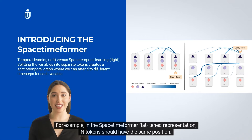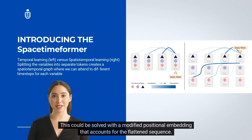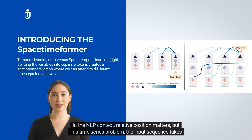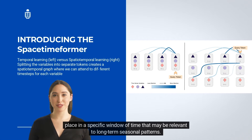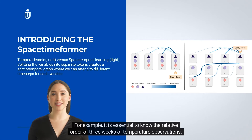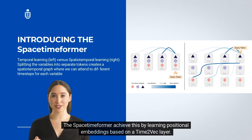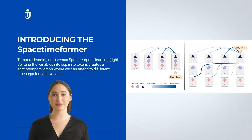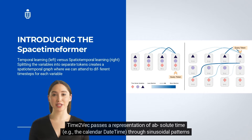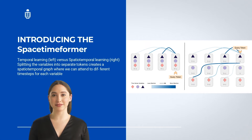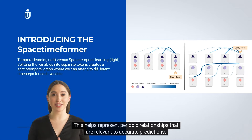This is fixed by adding a position embedding to the tokens, usually with a fixed sinusoidal pattern. In the Spacetime Former's flattened representation, n tokens should share the same position, which requires a modified positional embedding that accounts for the flattened sequence. However, a fixed positional embedding only preserves relative order, whereas time series problems occur in a specific window of time relevant to long-term seasonal patterns. The Spacetime Former addresses this by learning positional embeddings through a Time2Vec layer, which passes absolute calendar time through sinusoidal patterns of learned offsets and wavelengths to represent periodic relationships relevant to accurate predictions.